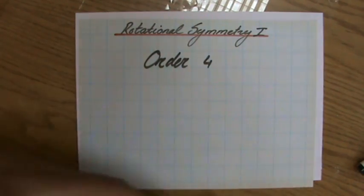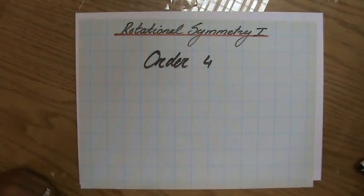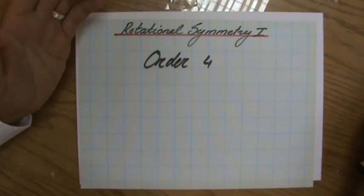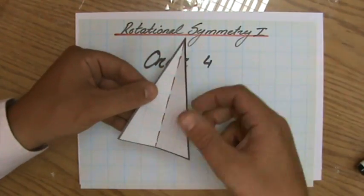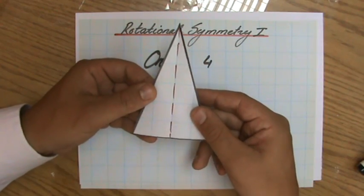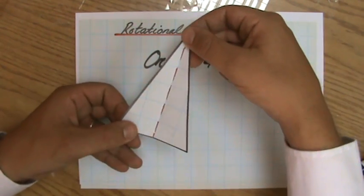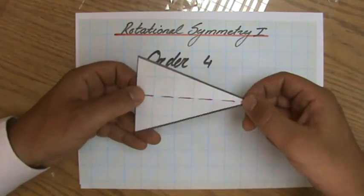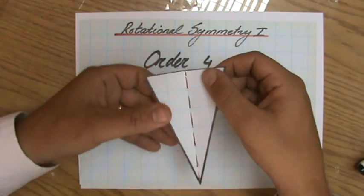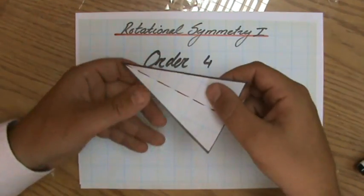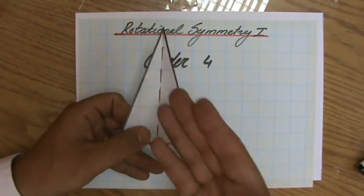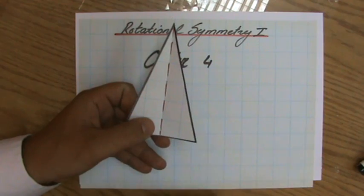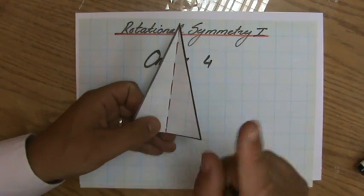Now, that means actually that everything has rotational symmetry of at least order one, because this triangle, for instance, which I used for explaining lines of symmetry, if I rotated one full turn, when does it look the same? When does it look the same? Yeah, now back in its original position. So everything, or this triangle, and everything else has at least rotational symmetry of order one.